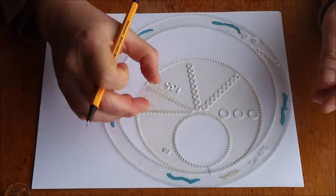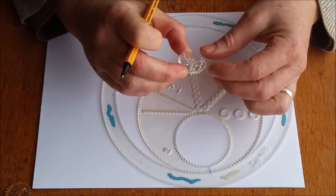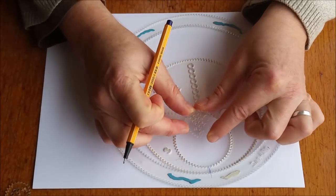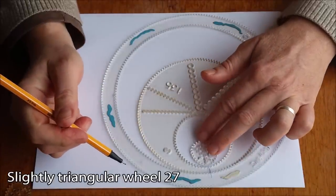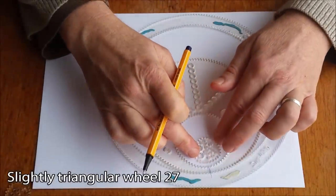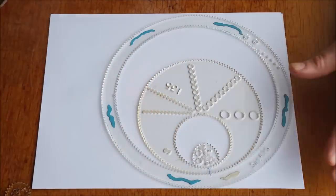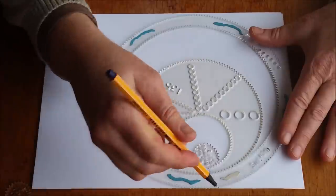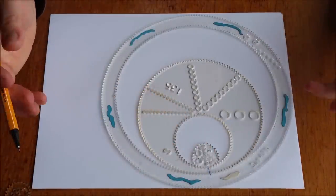And this time I'm going to use a wild gears wheel that's slightly triangular. It has 27 teeth and it's slightly triangular. I'm going to line it up this way from the flatter side of the triangle lined up with these two spots here just in case I need to come back, in case I make a mistake.